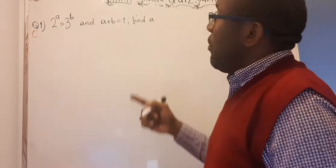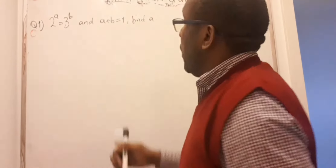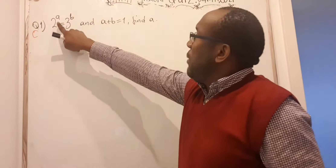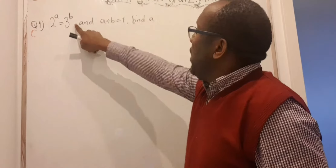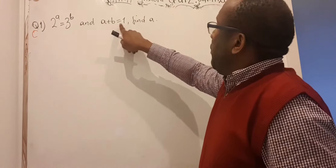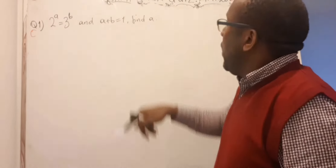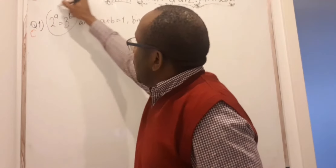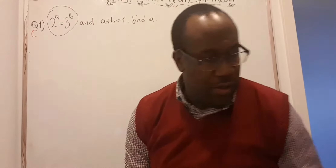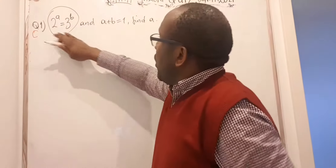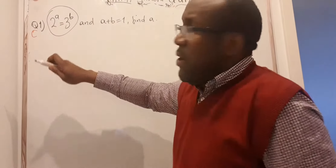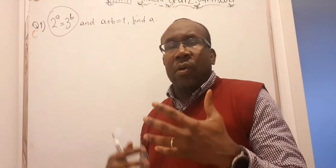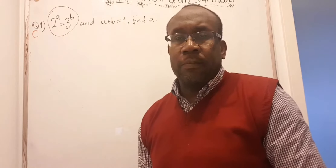The first question in that quiz was: we're given the equation 2 to the power a is equal to 3 to the power b, and that a plus b is equal to 1. You were asked to find a. When you have such an exponential equation where the bases are different, it's always important to think about introducing logarithm.